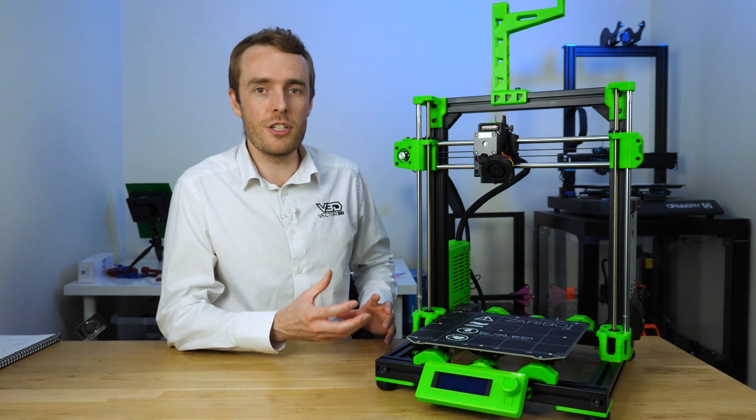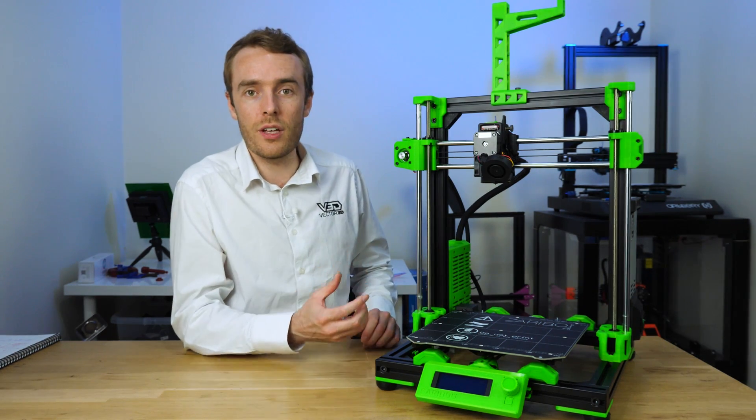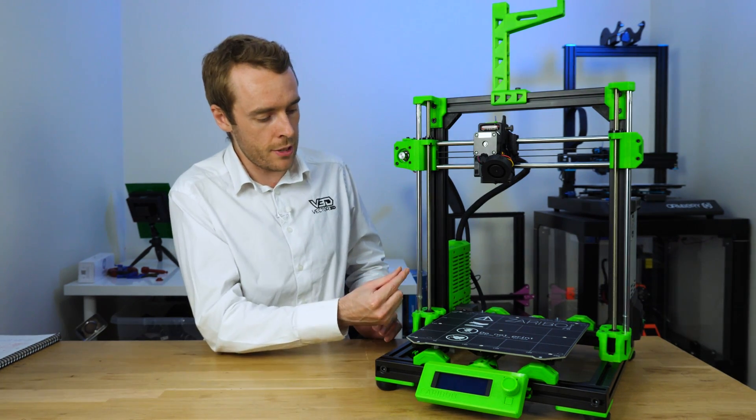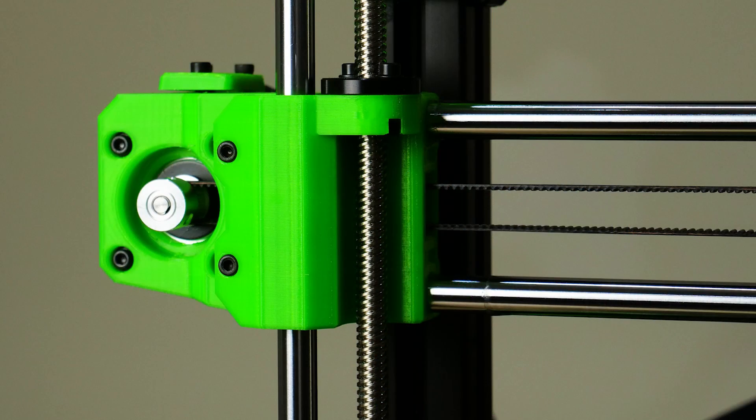The next part that adds to the rigidity of this machine is the steel rods. Now the original diameter on the Prusa is 8 millimeters, whereas all of the rods, both Z and both Y and both X, are 10 millimeters on this design, making them much stiffer and more rigid than the original.